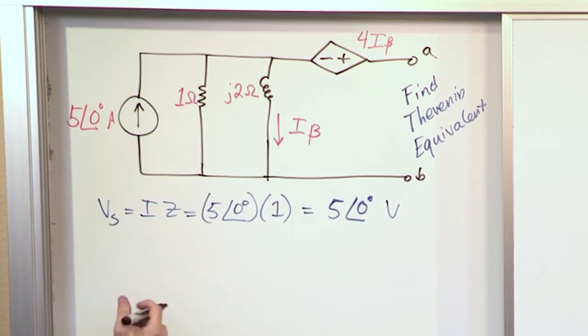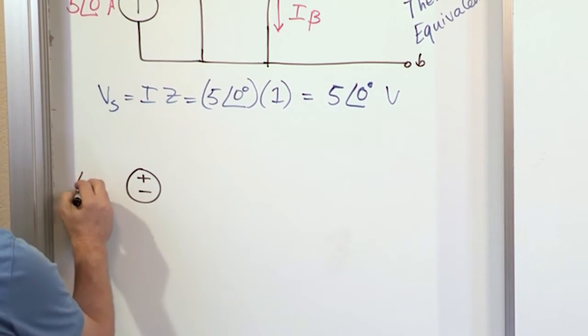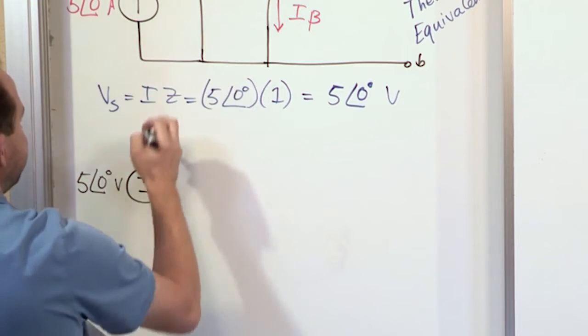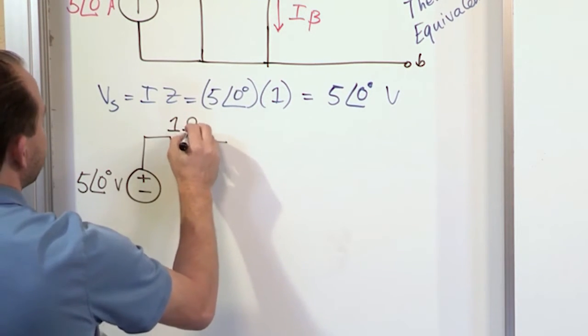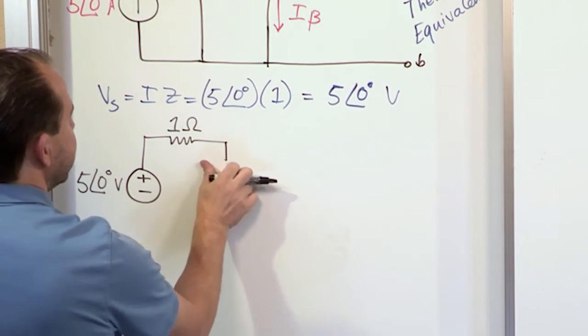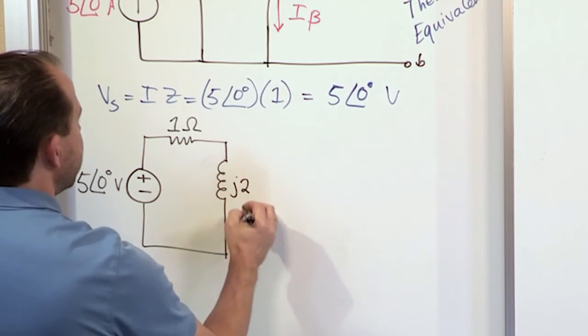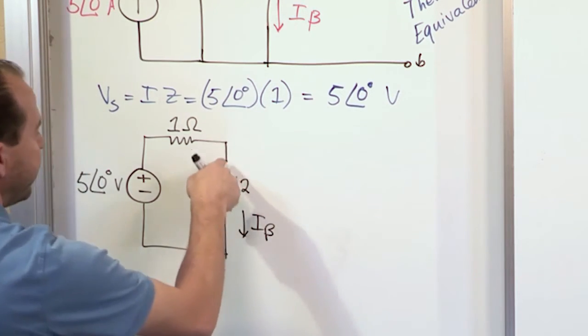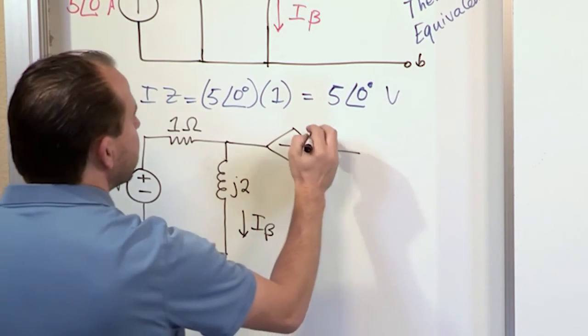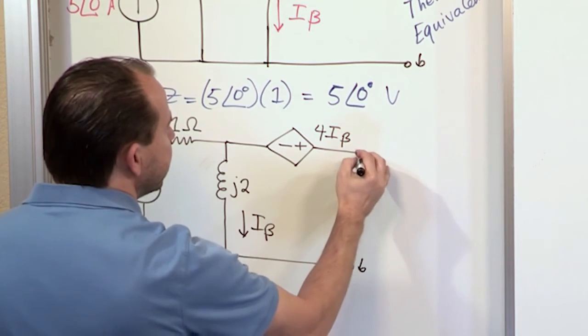So if I'm going to redraw the circuit, then what I'm going to have is this current source is going to change into a voltage source. The value of this voltage source is going to be 5 at an angle of 0 degrees. And then this impedance here is just going to come up in series with it, and it's going to live up here as 1 ohm. The rest of the circuit remains exactly the same. This inductance stays the same, and this inductance is J2. I beta is still the current that flows in this leg. And then you also have this dependent voltage source here. Polarity is very important. Four times whatever current is flowing in this guy, I beta. And then this is still terminal B, and this is still terminal A.